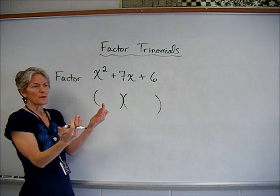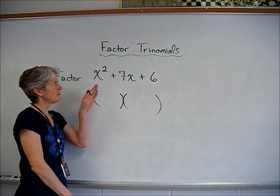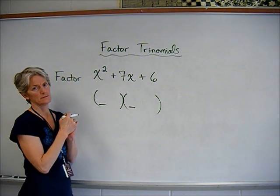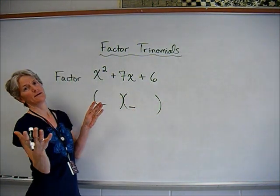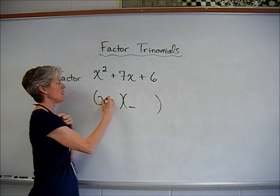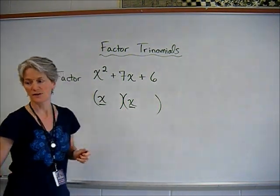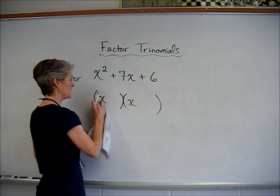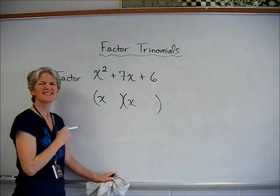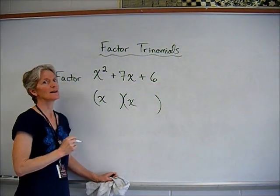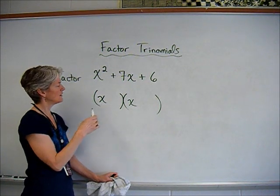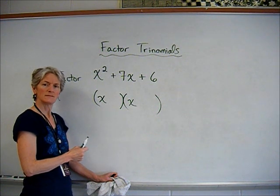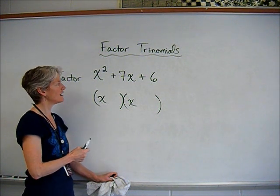And now I'm thinking about the double distribution, or FOIL, if you will. So this times this has to equal my x squared. So what times what equals x squared? Well, x times x works. So that's going to work there. So far, so good. Now, I mean, could it be something else? Could it be like x squared times 1? Is that going to do it for me? It could, but it's not going to work as I go further.